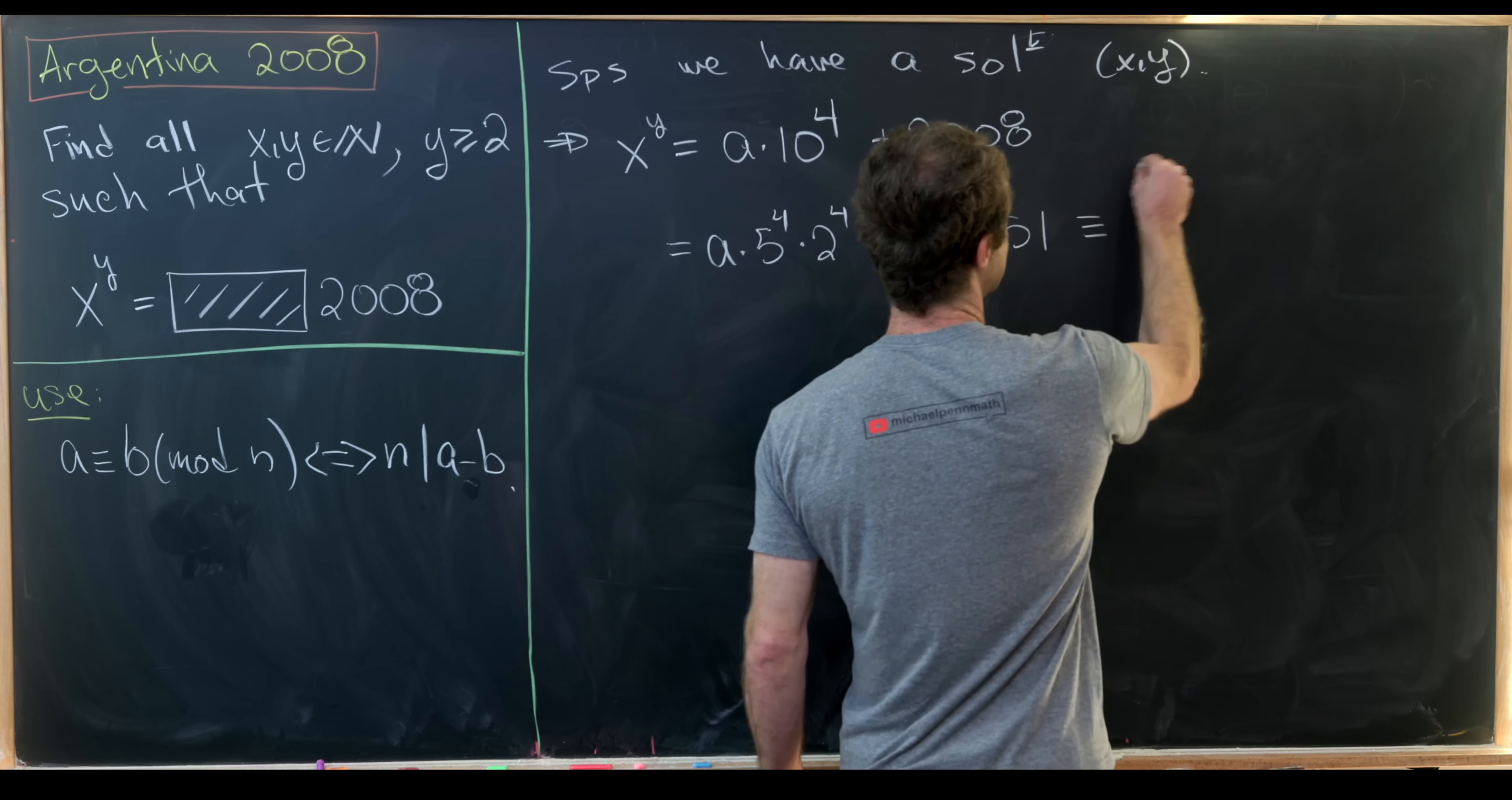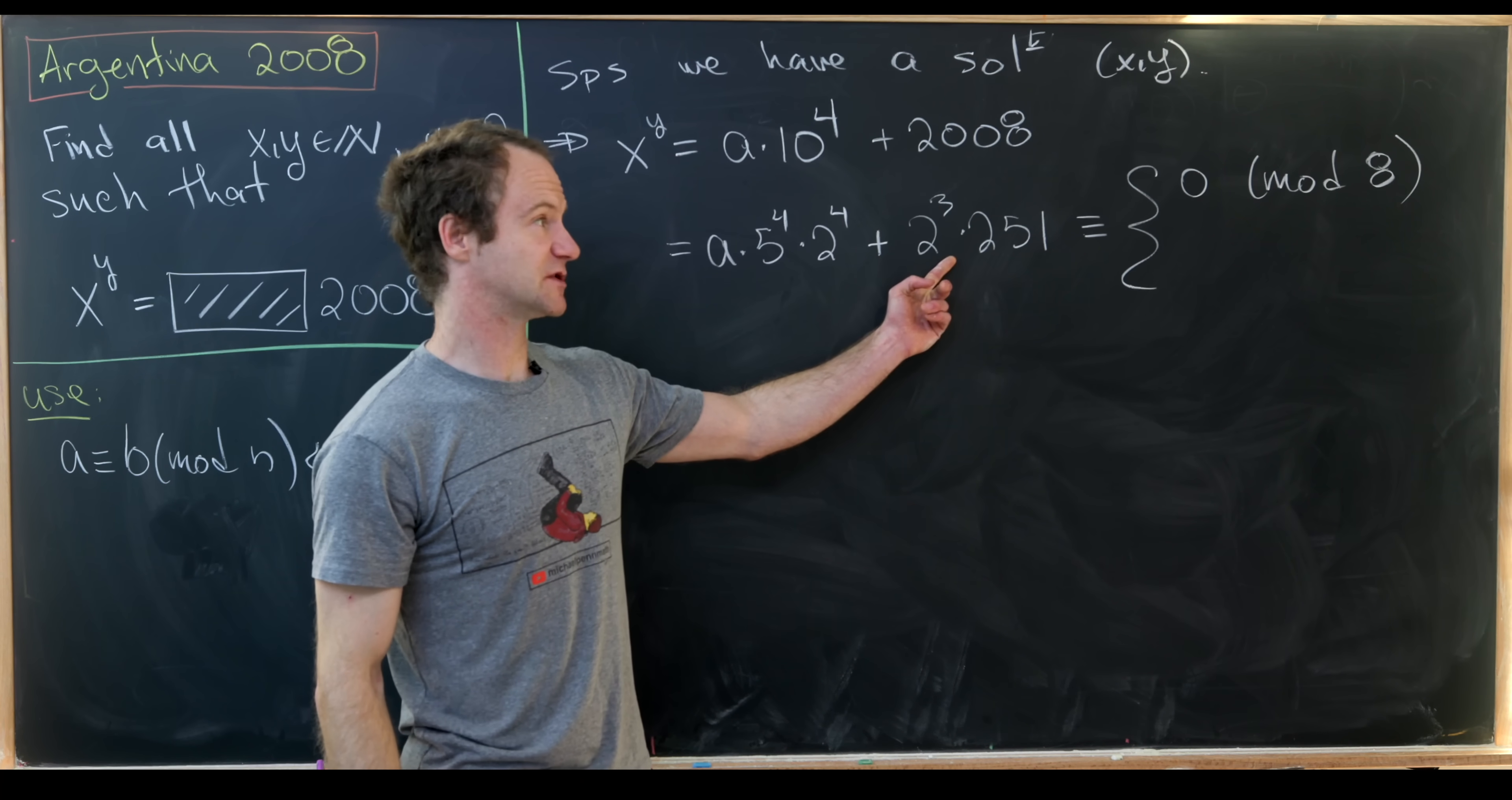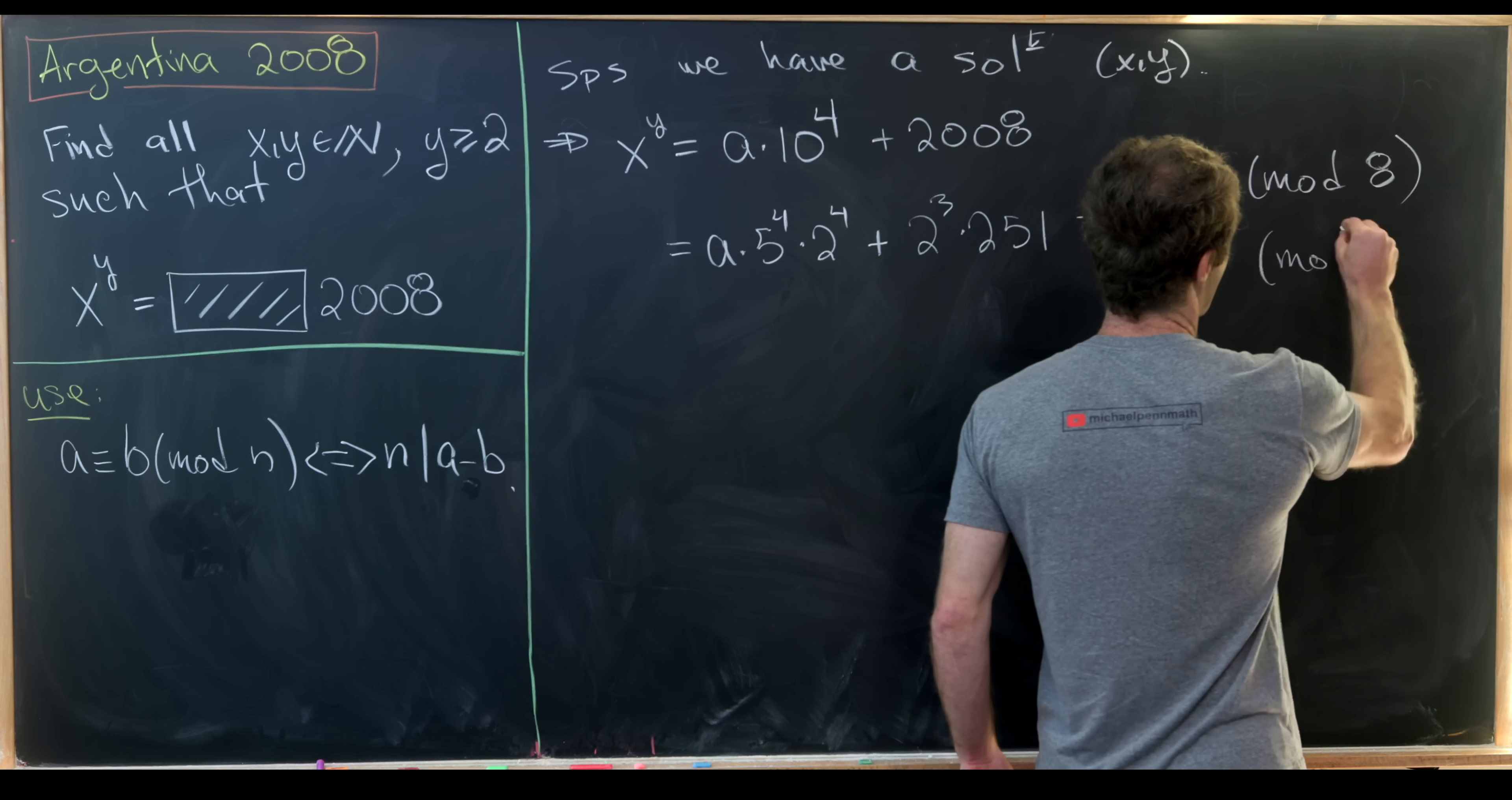Now let's notice that this is congruent to 0 modulo 8. That's because here we've got a multiple of 16, here we have a multiple of 8, so those are both multiples of 8. But this is not congruent to 0 mod 16.